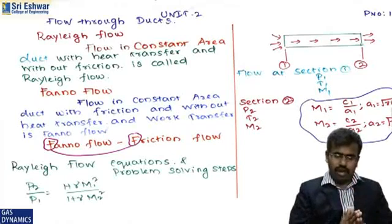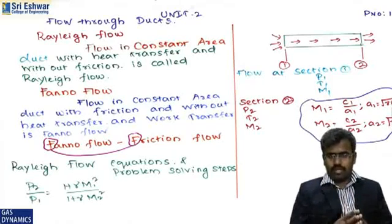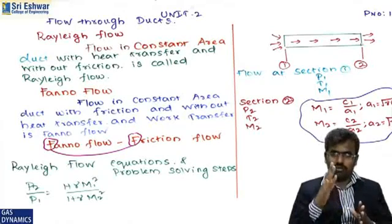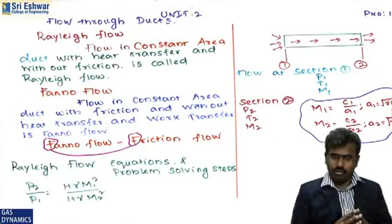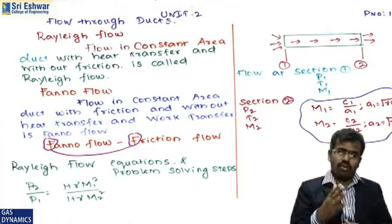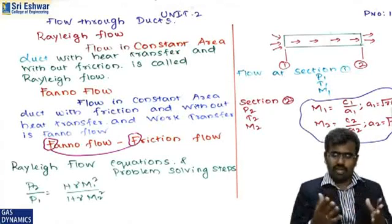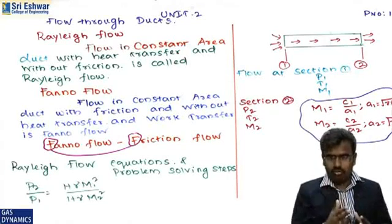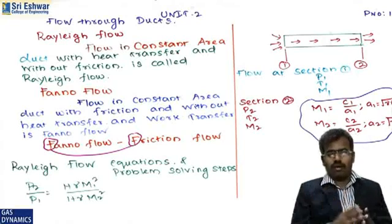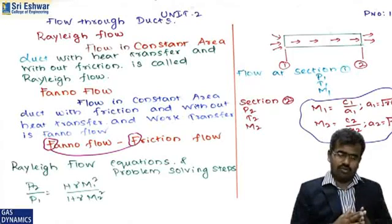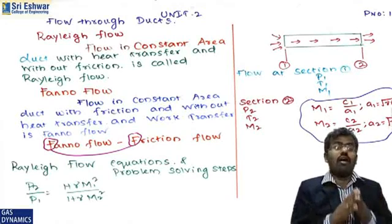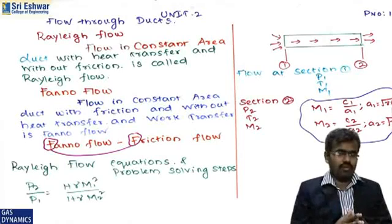If the Mach number M1 is given, solving is straightforward. If the Mach number is not given, you need to calculate it using M = c/a — so M1 = c1/a1 and M2 = c2/a2. If the value of a2 is not given, you can find it using a = √(γRT2). Similarly, if a1 is not given, use a1 = √(γRT1).